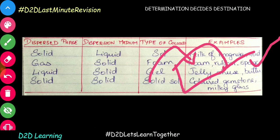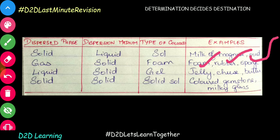When liquid is dispersed in solid, we call it a gel. The gel is liquid in solid. For example, beauty products — you apply a little gel, which is liquid in solid. What is the name? It is a gel.